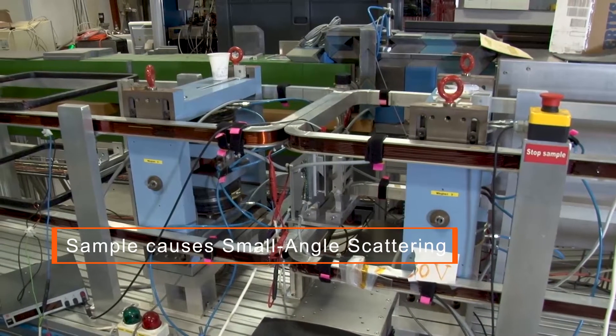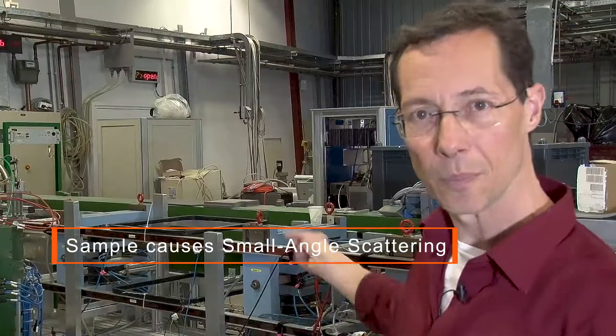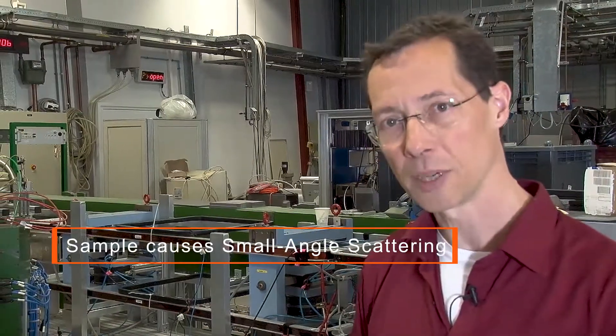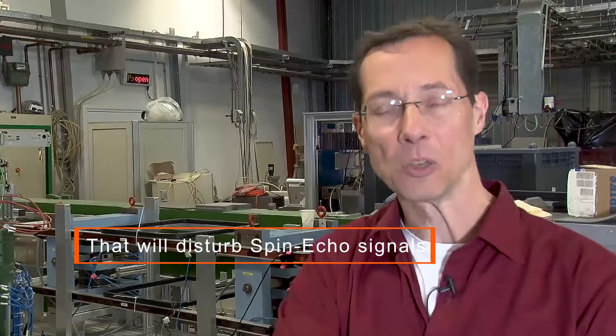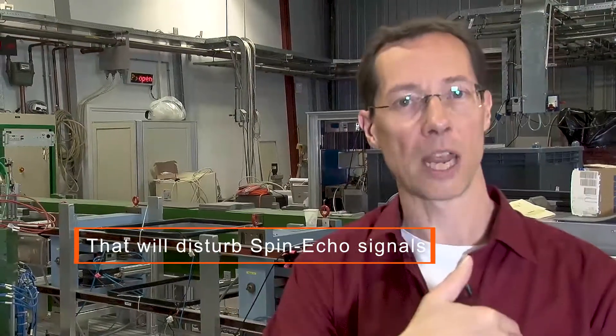If you now put a sample in the middle of the setup, then that will give small angle scattering, and that will disturb your spin echo signal. It will decrease the polarization.